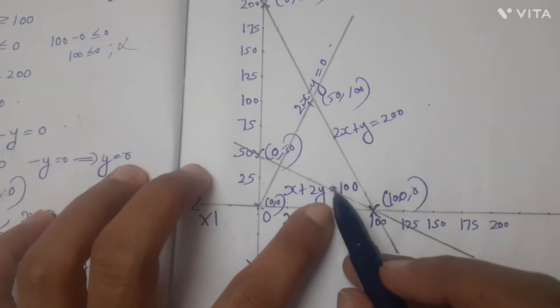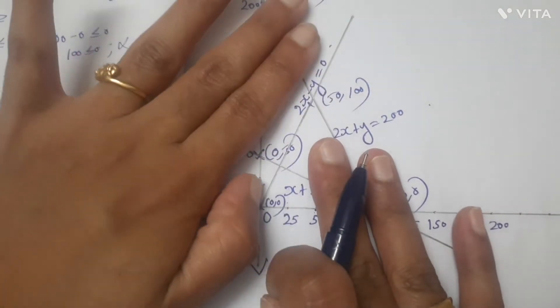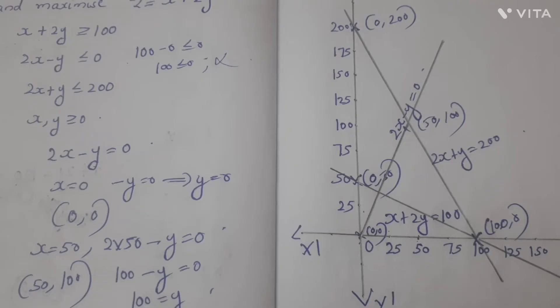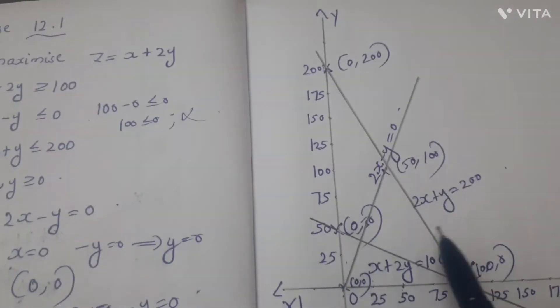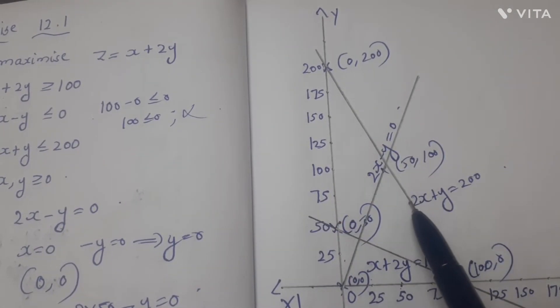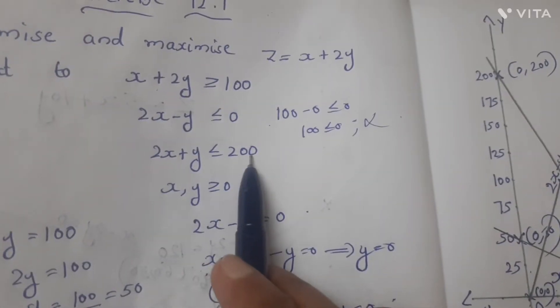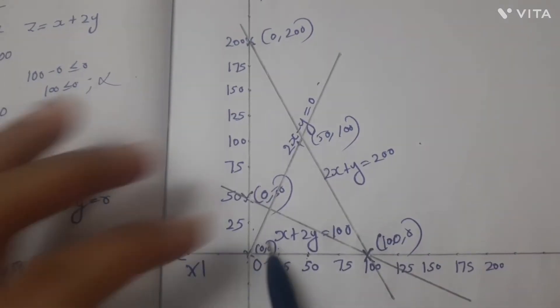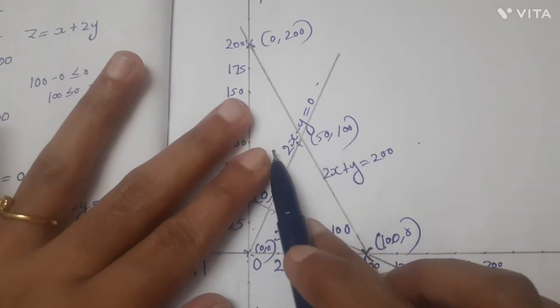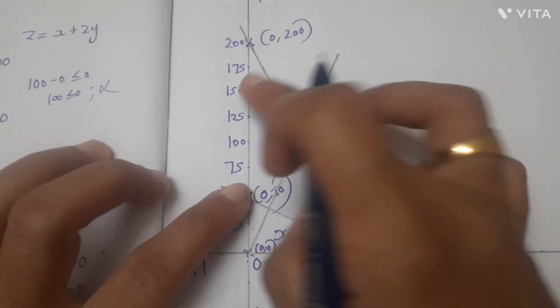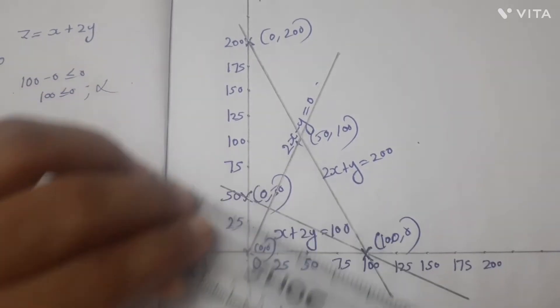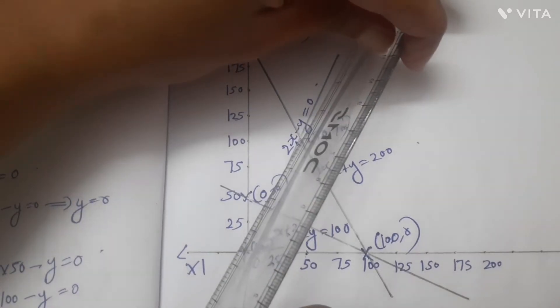We also have 2x minus y equal to 0. Now check the point (0,0): substitute into the constraint — 0 plus 0 is less than or equal to 200, which is true. The shaded region is on the side where (0,0) satisfies the inequality.